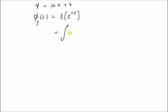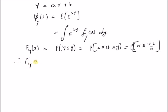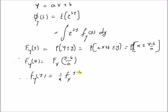Writing the definition of this expectation, we have the integral of e to the power s times y, times f_y of y — that is the PDF of y — dy. But since y equals ax plus b, the PDF of y can be determined as follows: F_y of y equals the probability that ax plus b is less than or equal to y, which equals the probability that x is less than or equal to (y minus b) divided by a. Therefore the CDF of y equals the CDF of x evaluated at (y minus b)/a, and so the PDF of y is 1/a times f_x of (y minus b)/a.